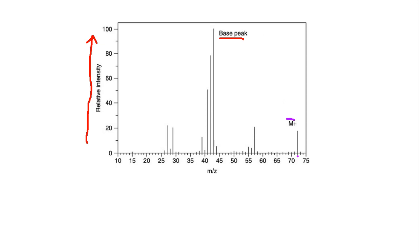It's a little bit difficult to see, but if you look right here we have 70, 71, and 72 is the M+ peak. It turns out that pentane does have a molar mass of 72.